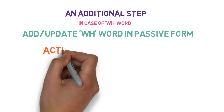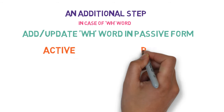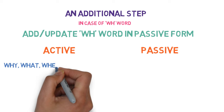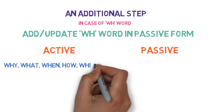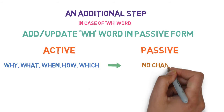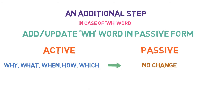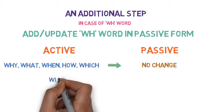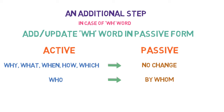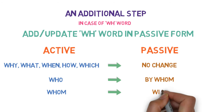If the sentence in active form starts with WH words like why, what, when, how, or which, there won't be any change in these words — they will remain the same in passive form as well. But in case of the WH word WHO, it gets converted to BY WHOM. And in case of WHOM, it gets converted to WHO.